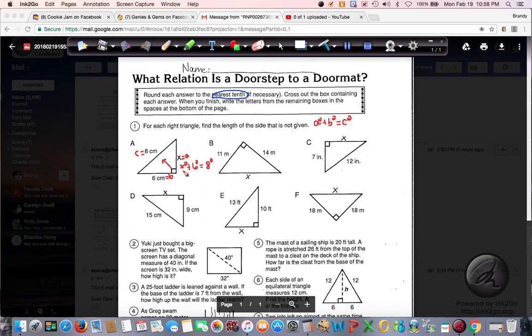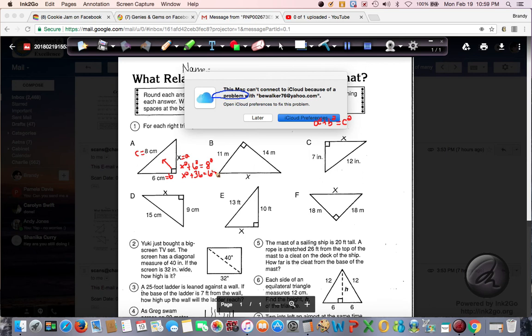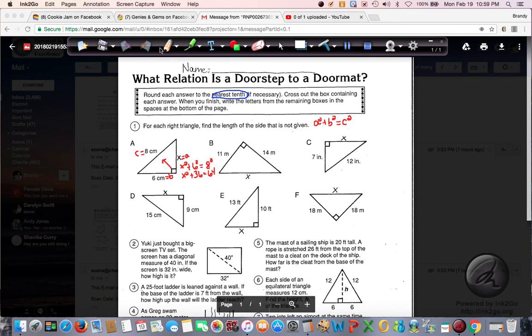So we have A is X. We are going to do X squared plus B squared, and B is 6. So we'll do 6 squared equals C, which is over here. So that's going to be 8 squared. Alright, so the first thing we do, take care of all of our squares. We have X squared. 6 squared is 36. If you don't have these things memorized, that's okay. You can always use your calculator. 8 squared - it's not 8 times 2, don't put 16. It's 8 times 8, which is 64.